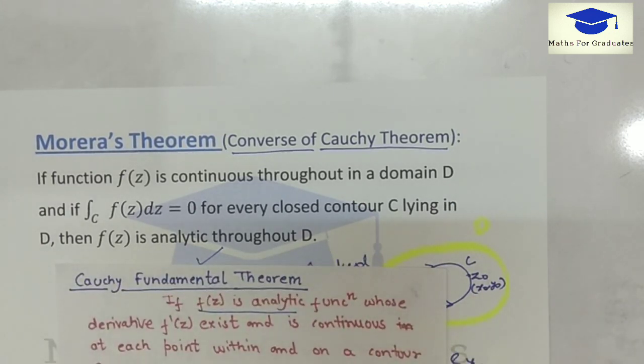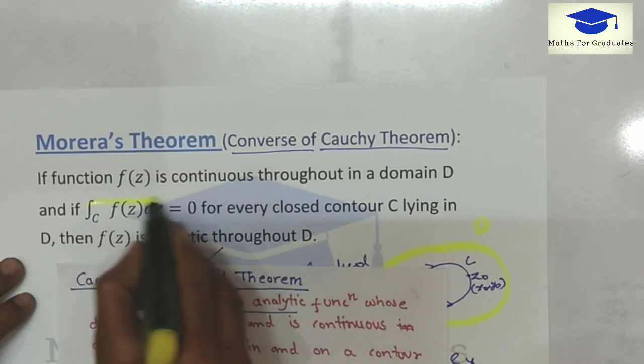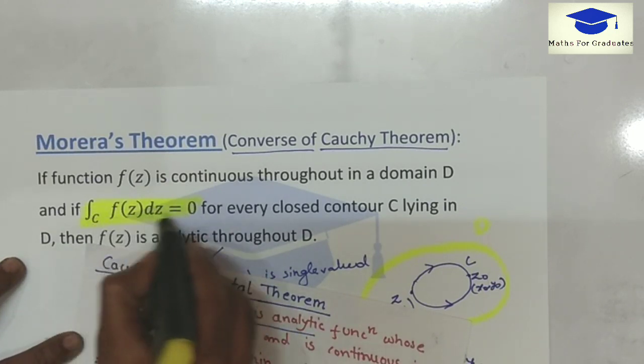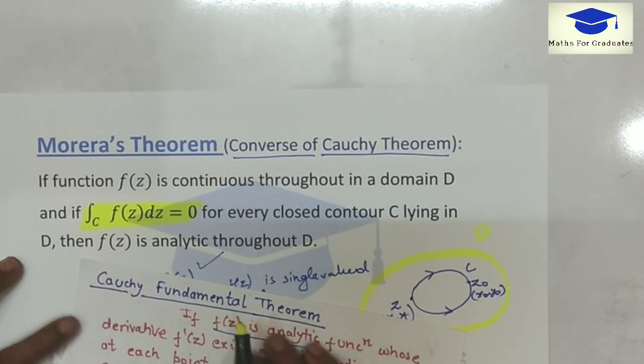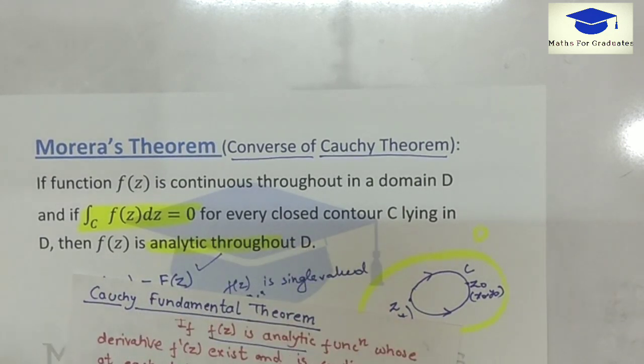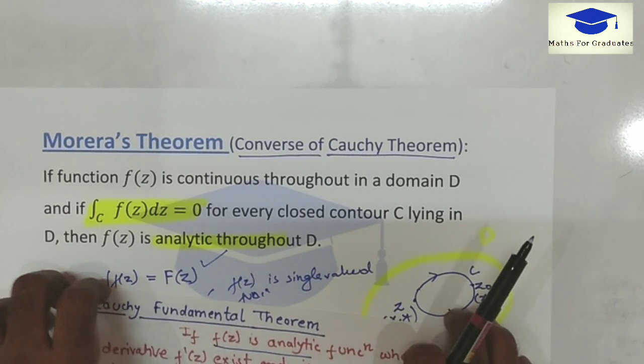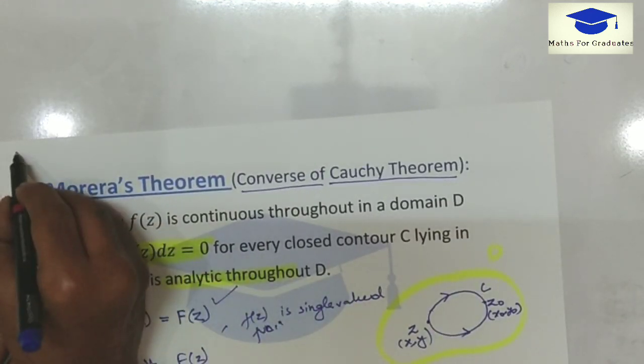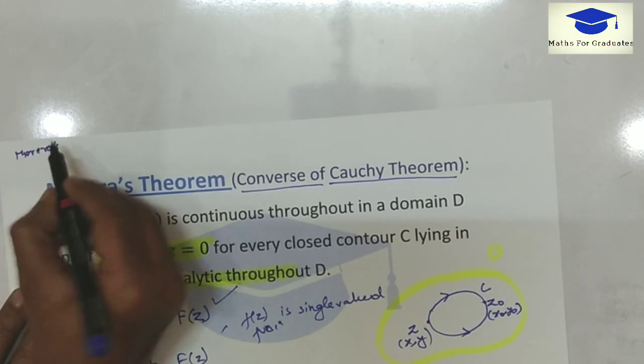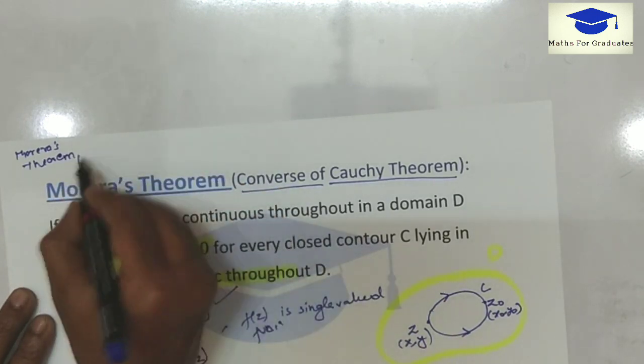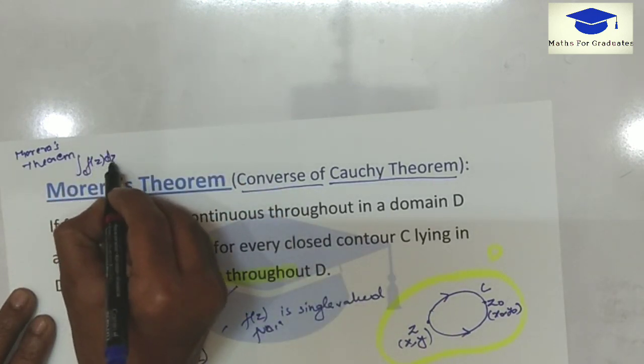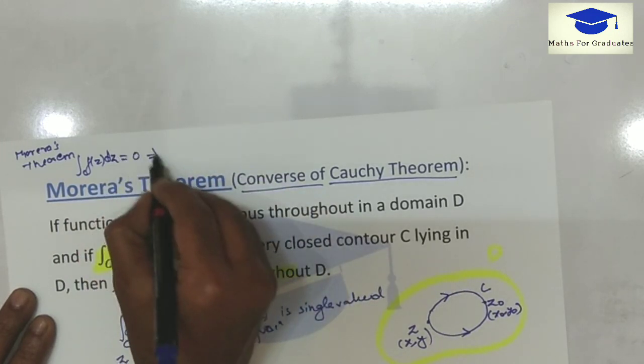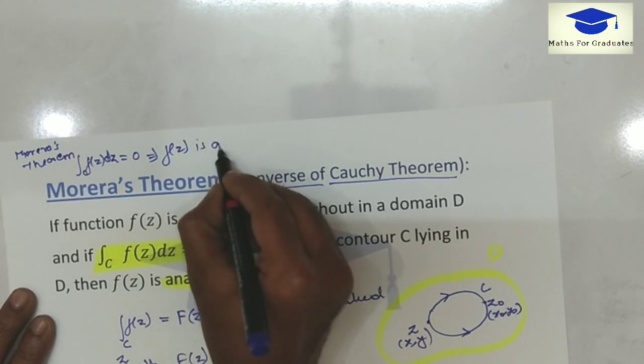Now here according to Morera's theorem, if integral is 0 in a contour, then it is analytic. Recalling the same statement again, according to Morera's theorem, if integration of complex function inside the contour or on the contour is 0, this implies that f(z) is analytic.